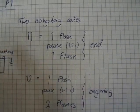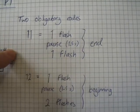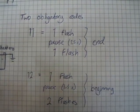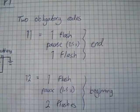Once you have got to the end of the code stream, you will get a code 11. This is one flash, a pause of one and a half seconds, followed by another flash. This signifies the end of the code stream.